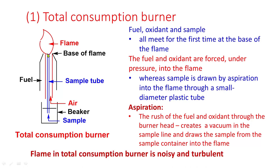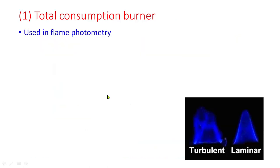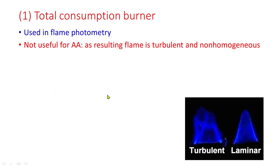The flame in the total consumption burner is noisy and turbulent — sometimes smaller drops, sometimes bigger drops enter the flame. The total consumption burner is used in flame photometry but is not useful for atomic absorption, as the resulting flame is turbulent and non-homogeneous.